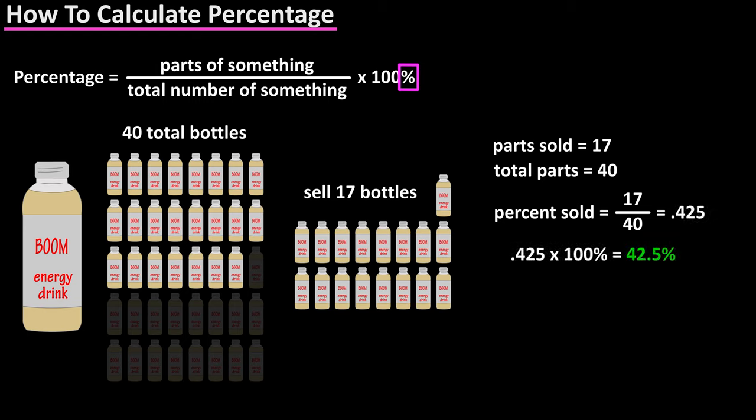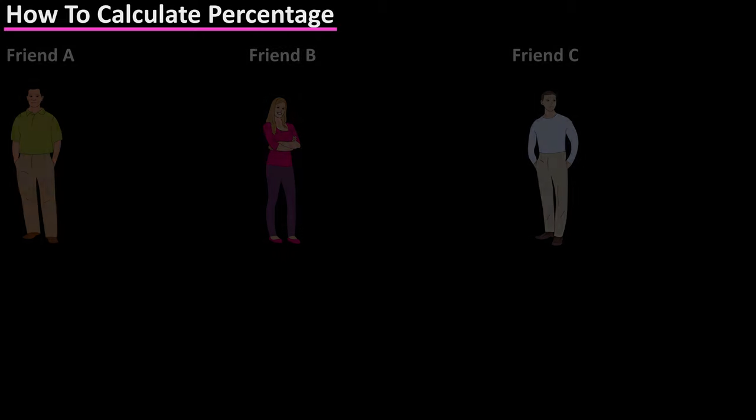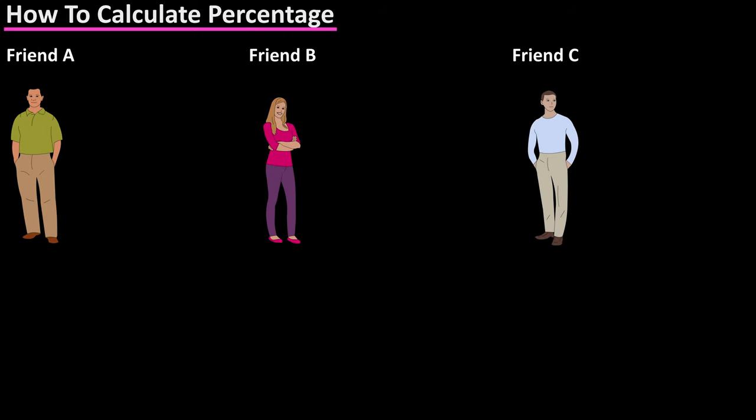Next, we multiply .425 by 100 percent, which gives us a final answer of 42.5 percent sold. The word percent actually means per 100, and it gives us a way to compare things.